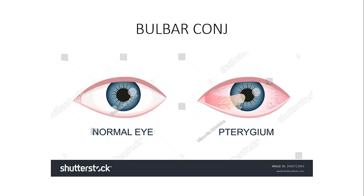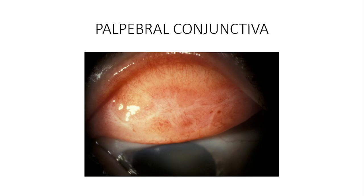There are a few things we need to know about the conjunctiva. It is transparent in nature, as you can see here. It is also vascularized — it has blood vessels. The vessels supplying the conjunctiva include the anterior ciliary artery as the main artery, and veins that drain it include the anterior ciliary veins.